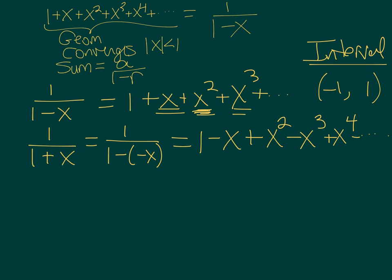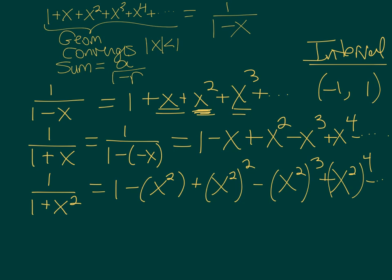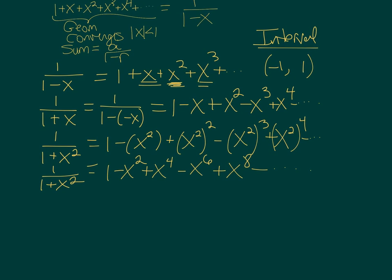I can then take that series and replace the x with an x². And I get 1 - x² + (x²)² - (x²)³ + (x²)⁴, which is 1 - x² + x⁴ - x⁶ + x⁸, etc. And I have a series for 1 over 1 plus x² that's made up of alternating signs and terms with even powers of x. Why is that useful to me? Because this expression is the derivative of arctan.